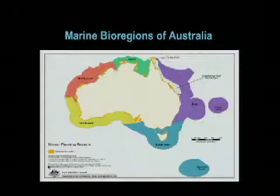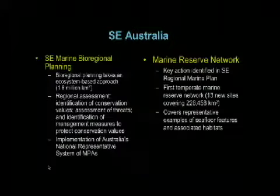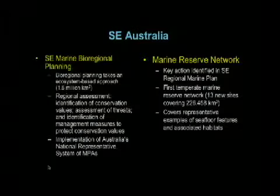That's the Australian example on the map. The colors aren't great, but the southeast region is over here — and that's the plan that basically went nowhere.